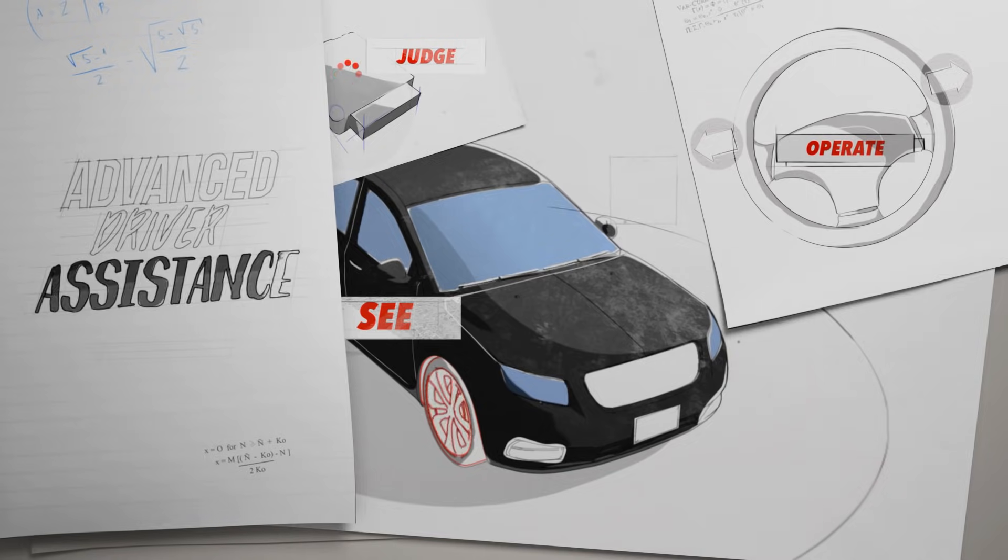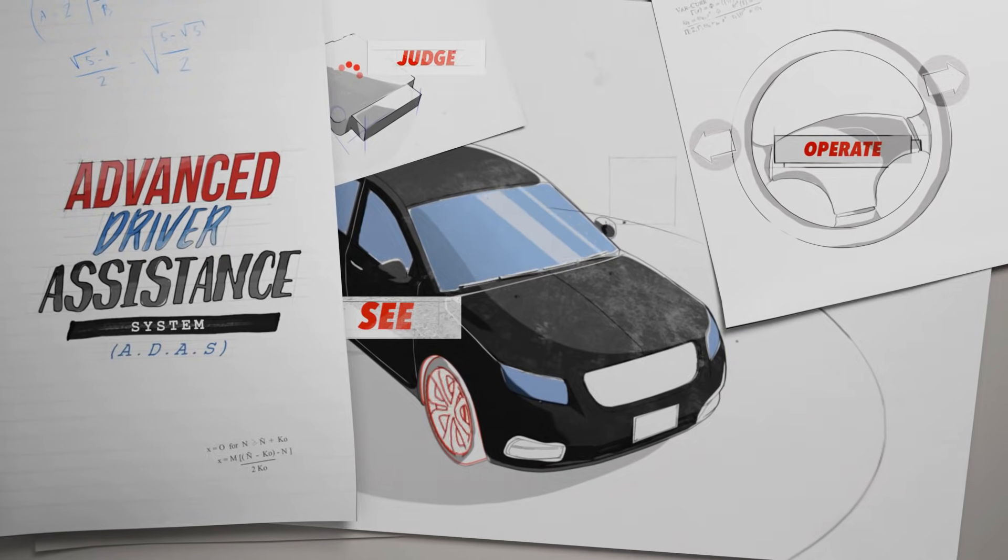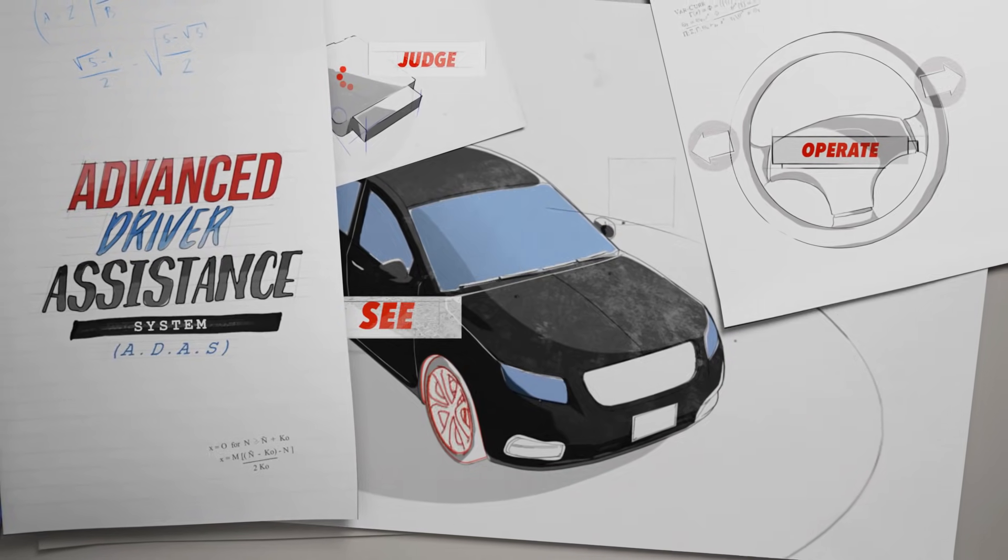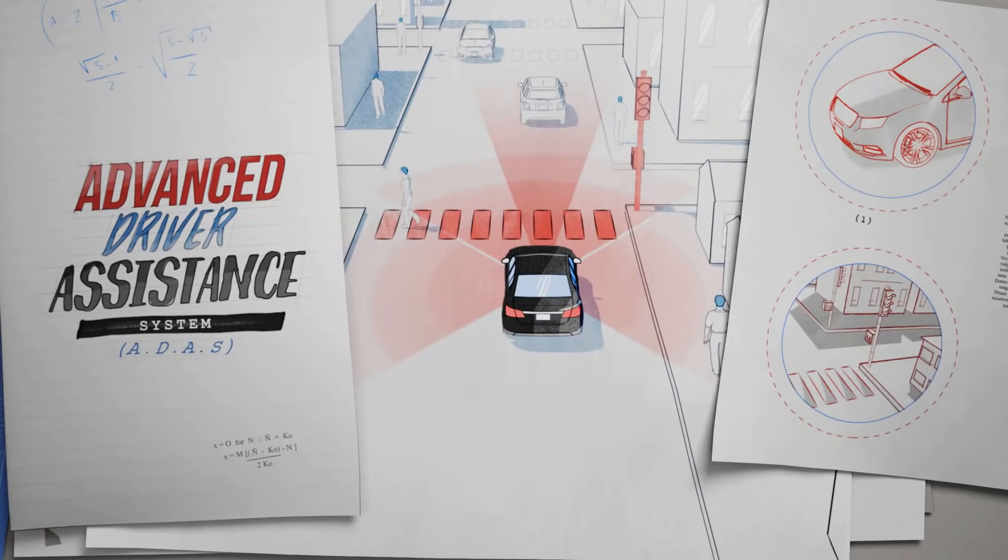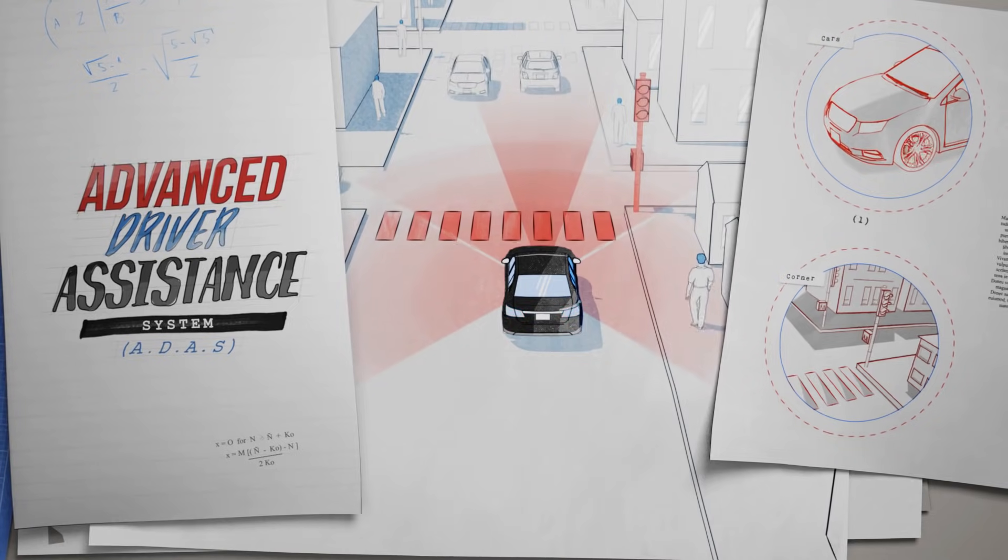So that's what our advanced driver assistance system is designed to do. To give the car the ability to judge, it needs to be able to see, and uses a millimeter-wave radar, camera, and ultrasonic sonar to identify the car's surroundings.